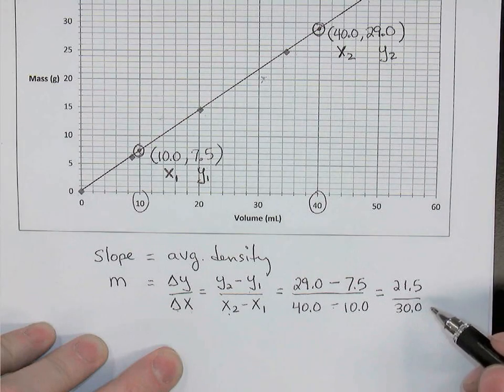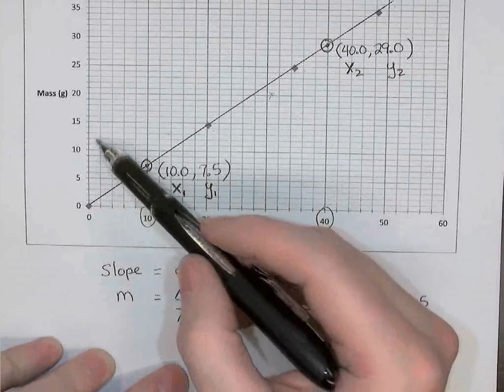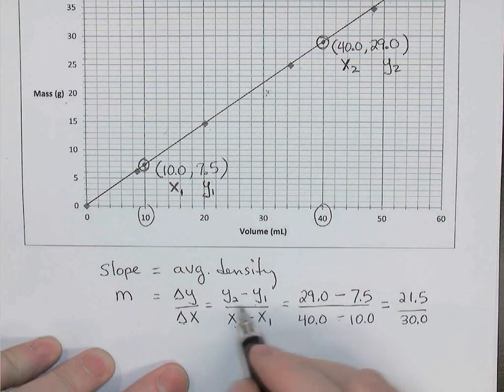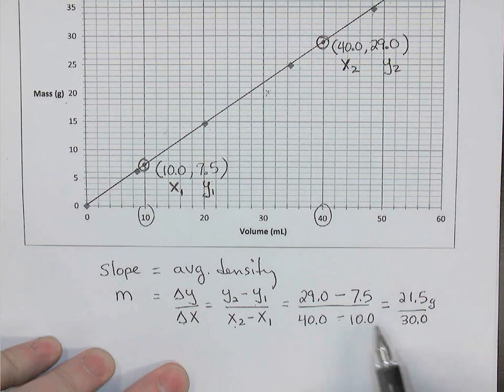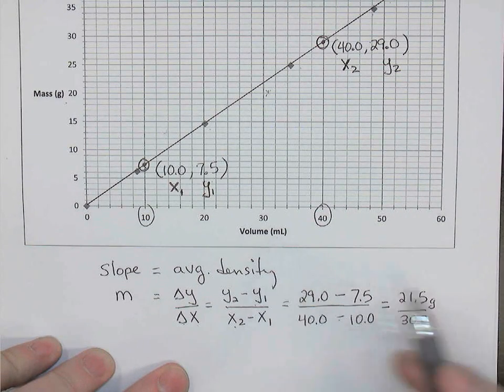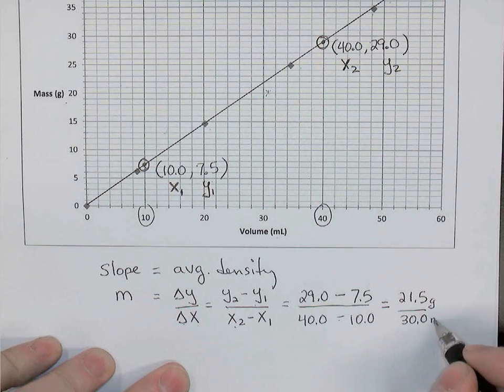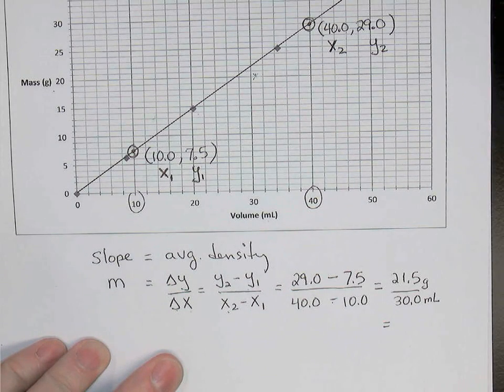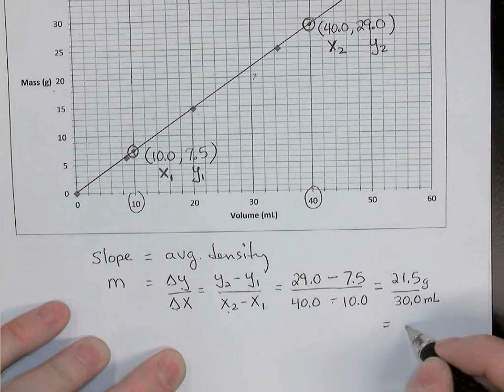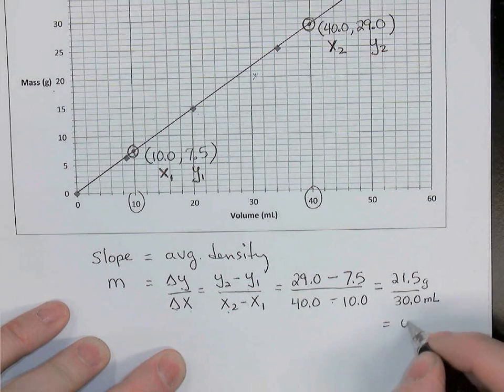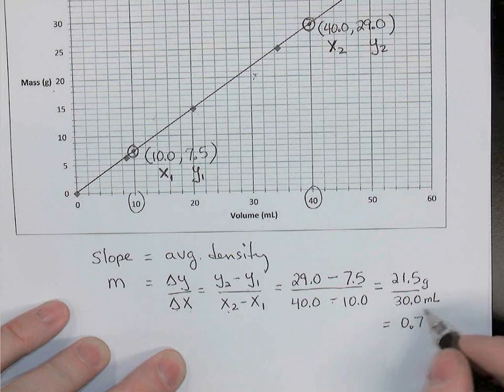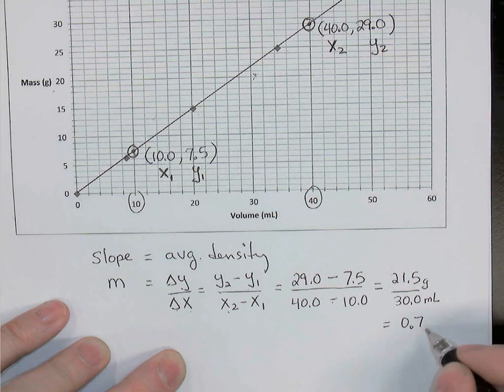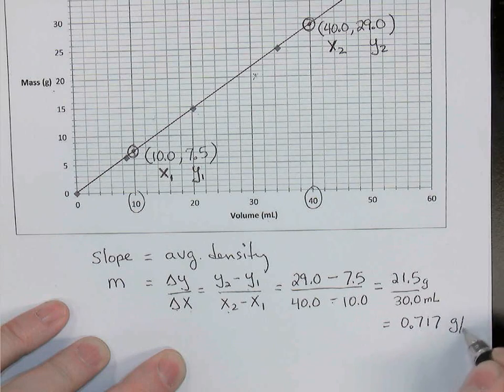Now the units here are kind of important. We've been leaving them out here, but the y values on the graph were masses and their units were grams. So the numerator of this fraction, the difference in y values is actually grams. And the x-axis was volume in milliliters. So this difference in x values represents milliliters. And now if we grab a calculator, 21.5 divided by 30 is 0.72 or 717, I guess. I've got three digits in the top number and three digits on the bottom number. So I'm going to keep three digits in my density, three significant digits, 0.717 grams per milliliter.